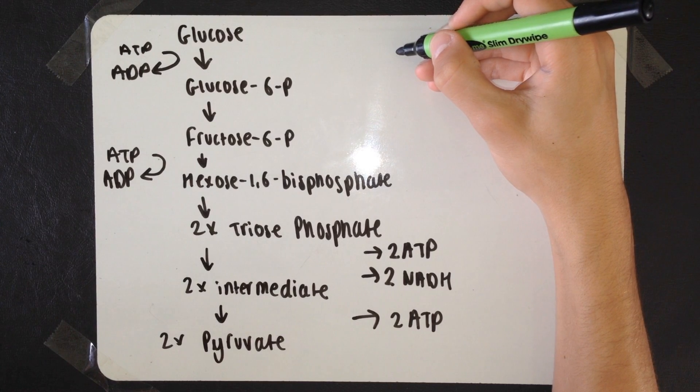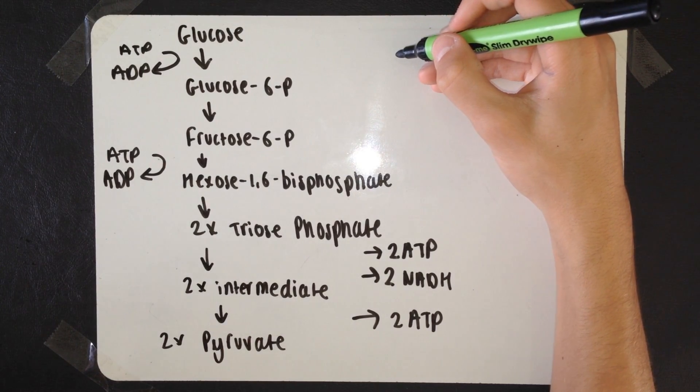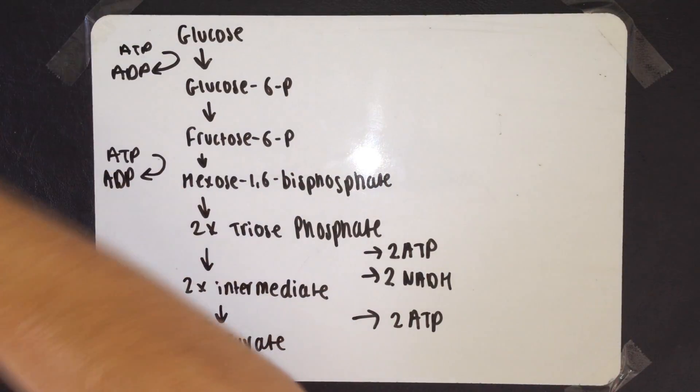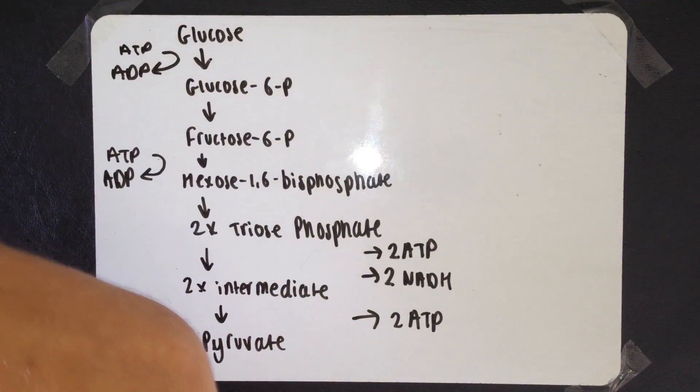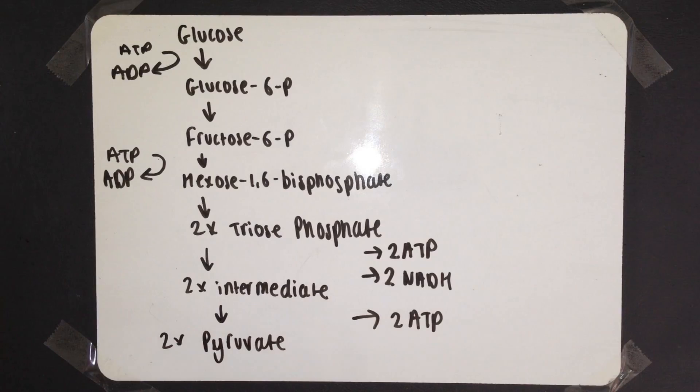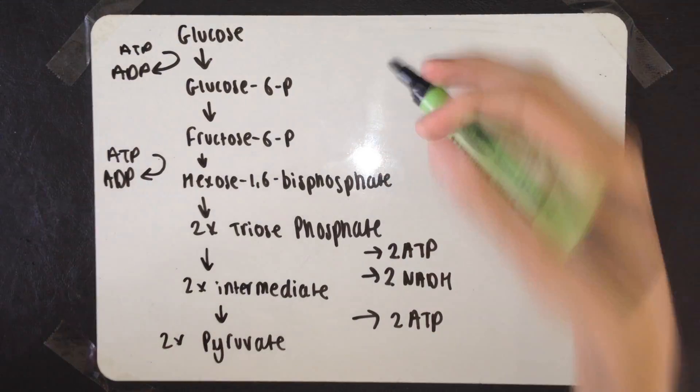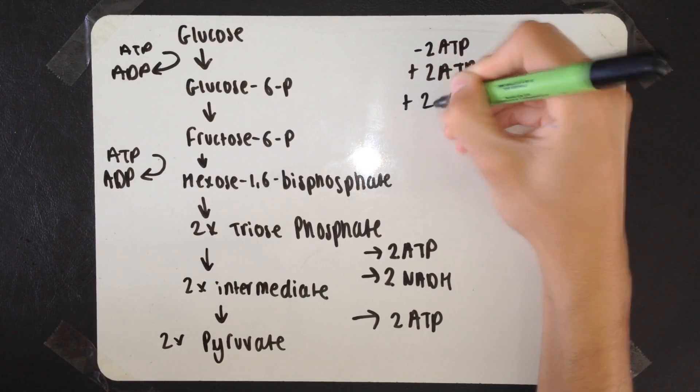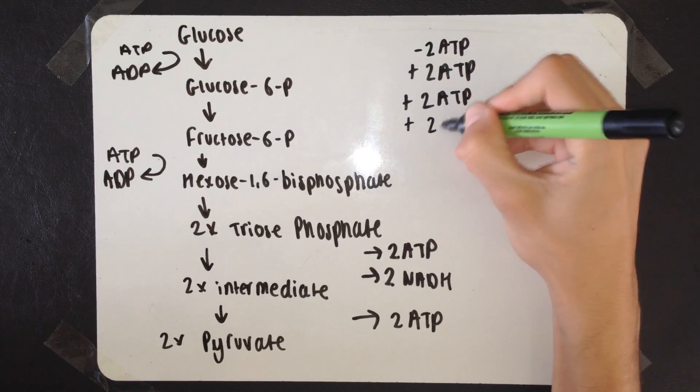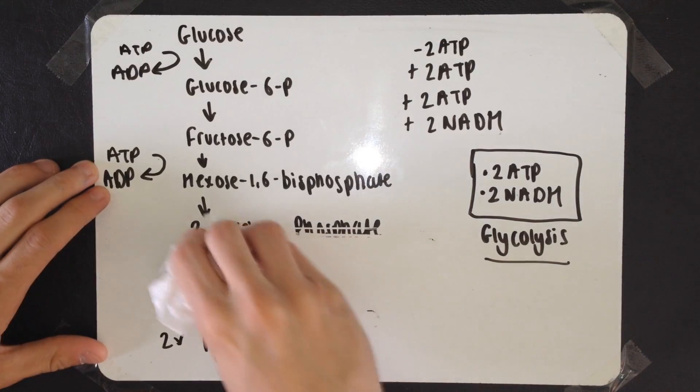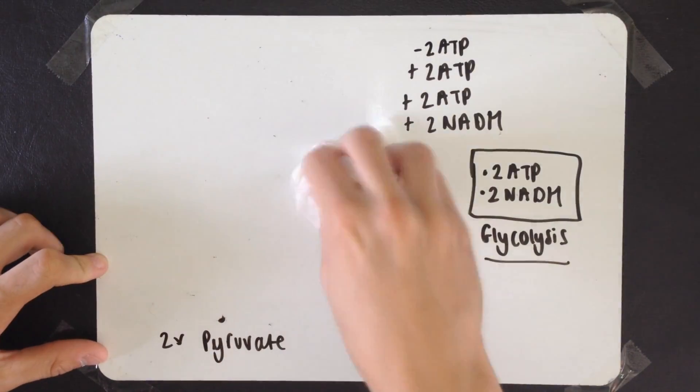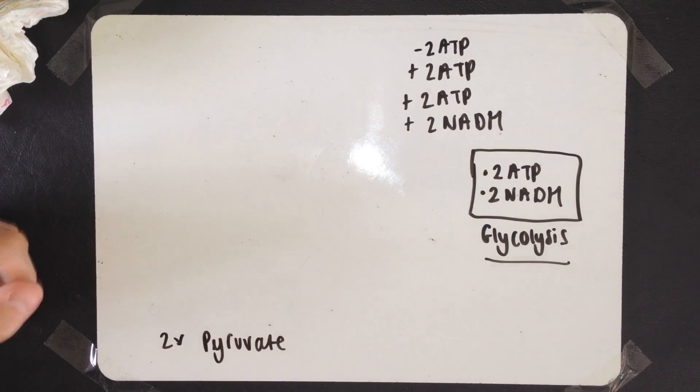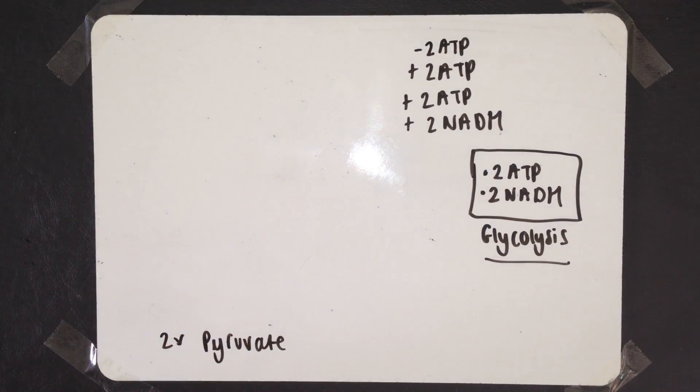Let's look at the products. Two molecules of ATP are used up, as you can see in the diagram, during the hydrolysis of ATP. We gain two more molecules of ATP during the transfer of the triose-phosphates into the intermediate compounds. We gain another two ATP molecules when changing that to pyruvate. We've also gained two NADH. Overall, from glycolysis, from one molecule of glucose, we've gained two molecules of ATP, two molecules of reduced NAD, and two molecules of pyruvate.